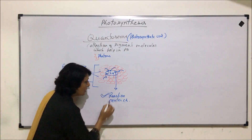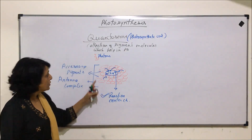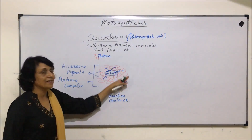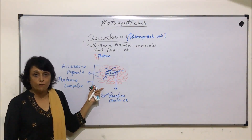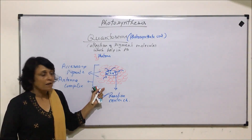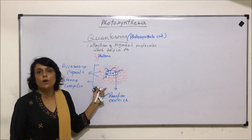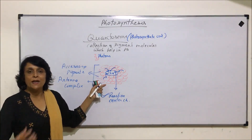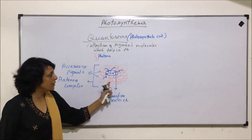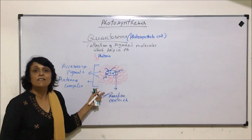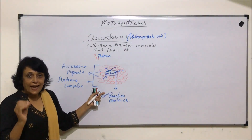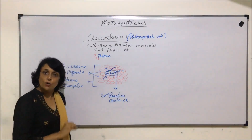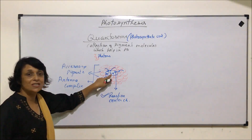That is why we call this the reaction center chlorophyll. Now we know the significance of all these accessory pigments — we talked of various types of chlorophylls, carotenoids, xanthophyll, phycobalins, all those things. So these pigments, depending upon their nature, absorb various wavelengths. That photon which they absorb is passed on to the reaction center chlorophyll, and the reaction is going to start from there. That is why all other pigments are known as accessory or helping pigments.